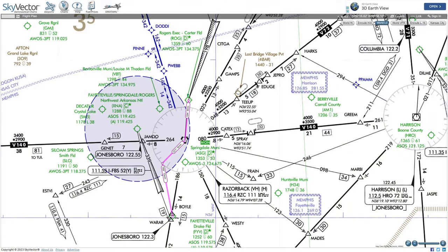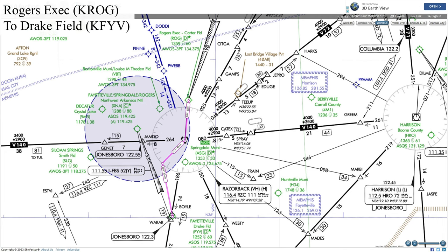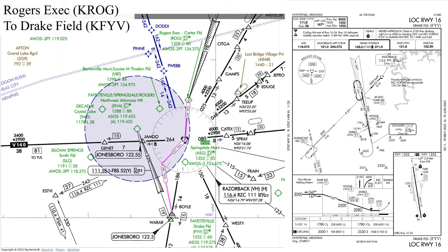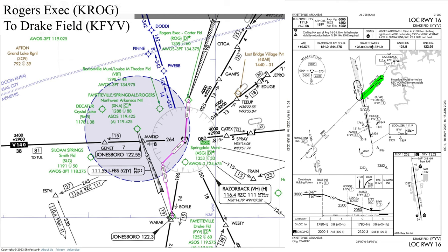To demonstrate flying a localizer approach we'll conduct a short IFR flight between Rogers Executive Airport in Rogers, Arkansas — identifier KROG, incidentally home to the Walmart Air Force — to Drake Field in Fayetteville, Arkansas, identifier KFYV. We'll plan to fly the localizer approach to runway 16 at Drake Field. After departing Rogers we'll proceed direct to the Razorback VOR, which is an initial approach fix, then track the 221-degree radial 6.2 miles to intercept the localizer for runway 16.